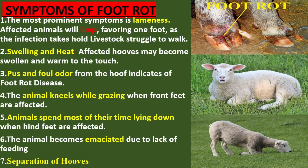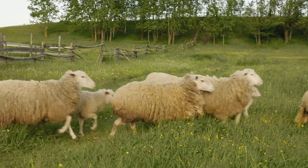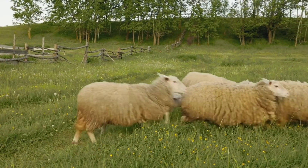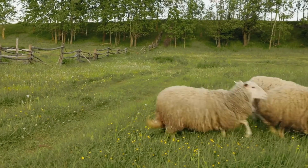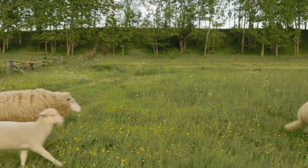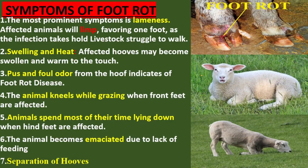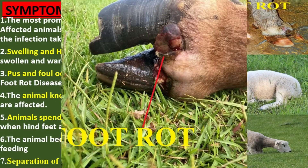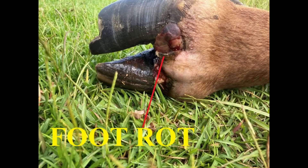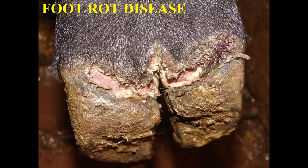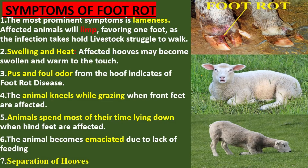Symptoms of foot rot. The most prominent symptom is lameness. Affected animals will limp, favoring one foot, and as the infection takes hold, livestock struggle to walk. The affected hooves may become swollen and warm to the touch. These signs point towards an ongoing infection that needs urgent attention.